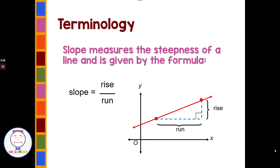When we talk about the slope or steepness of a line, we're comparing the ratio of the rise over the run. The rise compared to the run tells us how steep the line is.